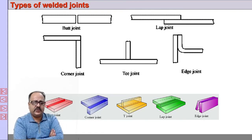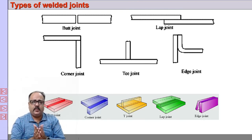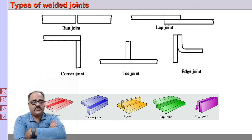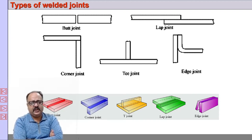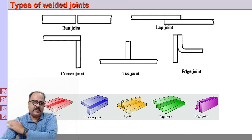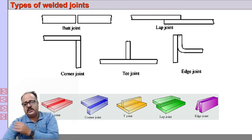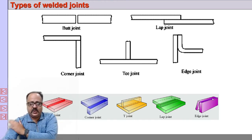There are different types of welded joints. When joining end to end, it is called a butt joint. When there is overlapping, it is called a lap joint. At a perpendicular right angle where two metal pieces form a corner, it is a corner joint. There is also a T joint and an edge joint, where you are joining the edges.